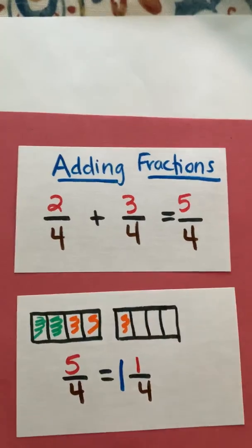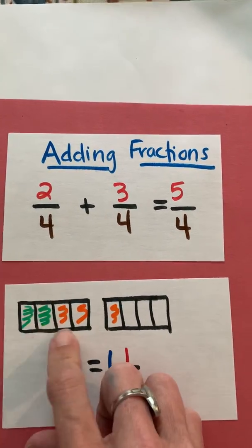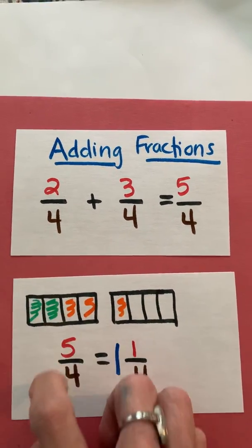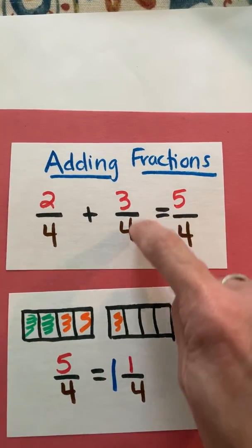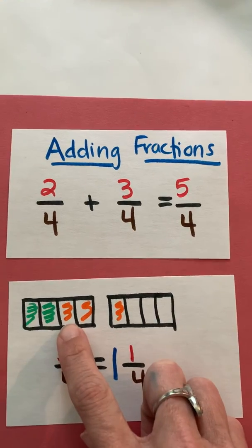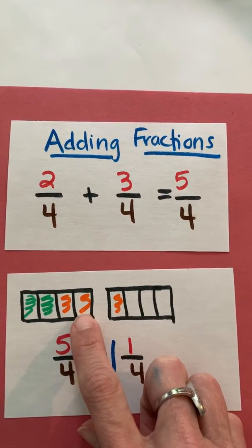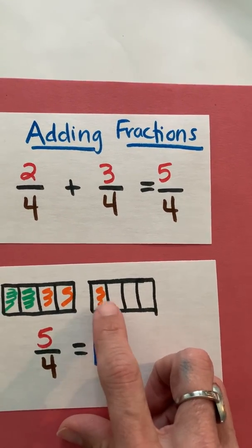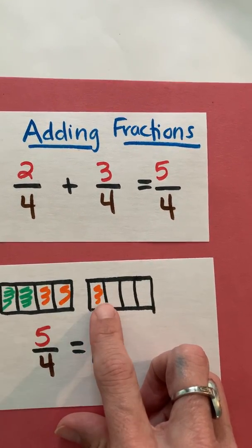So first of all, I want to represent two-fourths, and so I took one whole and I broke it into four parts and I shaded in two of those parts to represent the two-fourths. Then I wanted to add on three-fourths, so I shaded in this with orange, one-fourth, two-fourths, and then I realized I'm going to have to draw another whole, break it into four parts to get my third one-fourth.